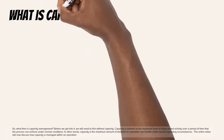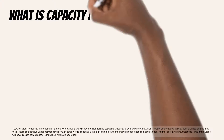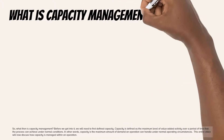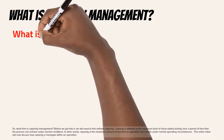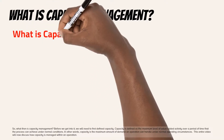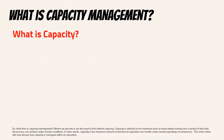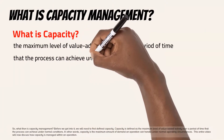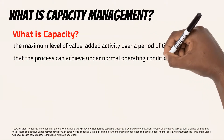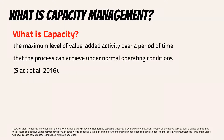So, what then is capacity management? Before we get into it, we will need to first define capacity. Capacity is defined as the maximum level of value-added activity over a period of time that the process can achieve under normal conditions. In other words, capacity is the maximum amount of demand an operation can handle under normal operating circumstances. This entire video will now discuss how capacity is managed within an operation.